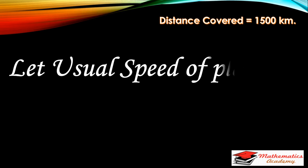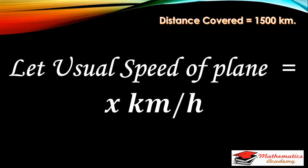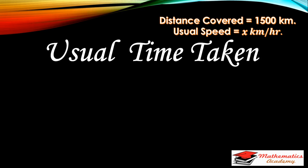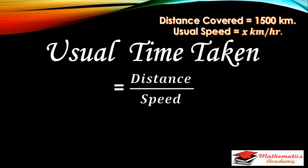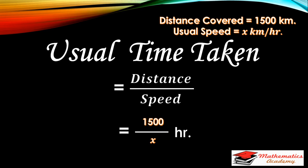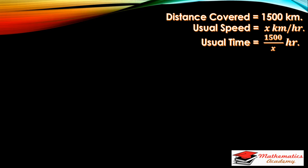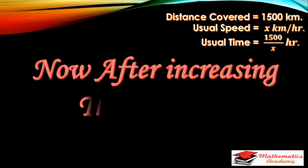Let us assume that the usual speed of the plane is X km per hour. The usual time taken by the airplane is given by the formula: time = distance / speed. The distance is 1500 km and the speed is X km per hour, so the time taken will be 1500 upon X hours.